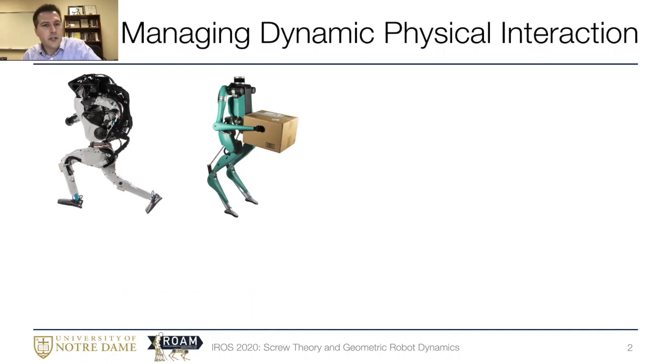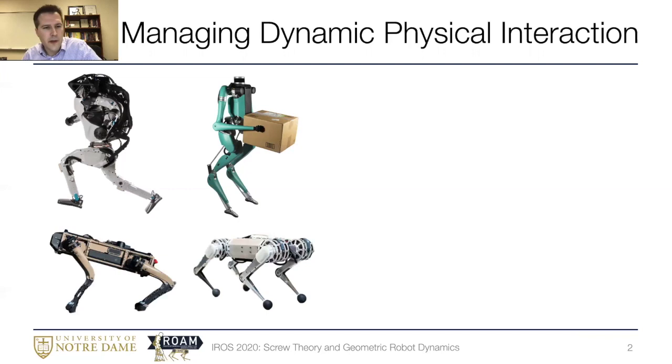Whether it's Boston Dynamics Atlas or Digit from Agility Robotics, these systems are able to move dynamically through the world and do meaningful work within it. We see similar progress on the quadruped side as well with Ghost Robotics Vision 60 beginning to support our troops and the phenomenal dynamic performance of the MIT mini cheetah robot and the many platforms that it is subsequently inspired.